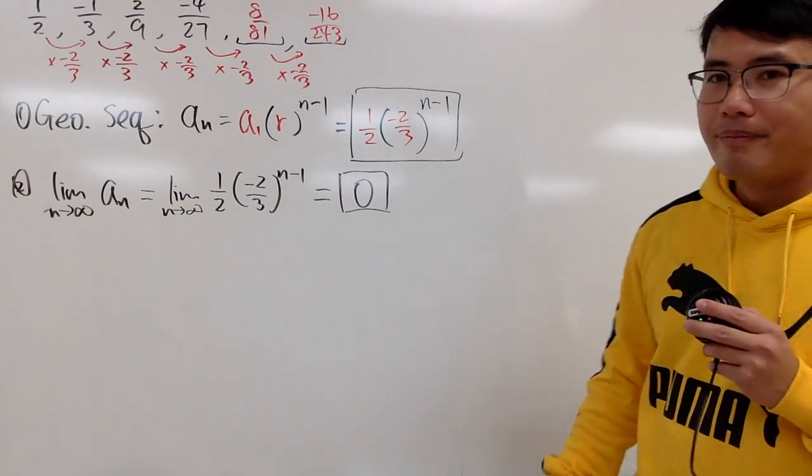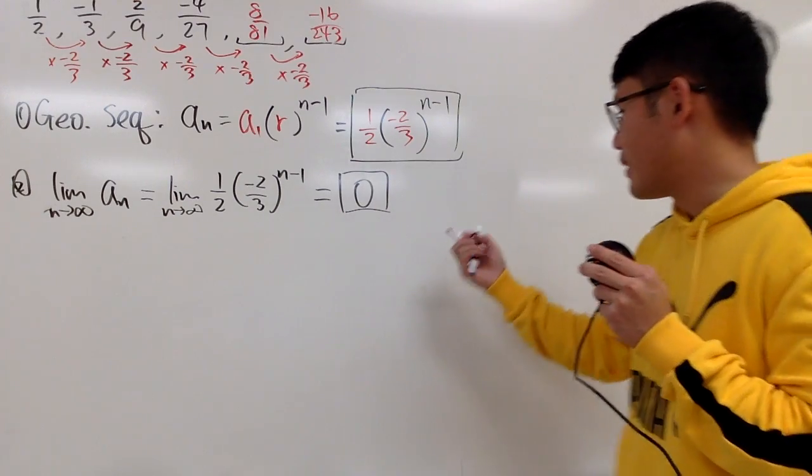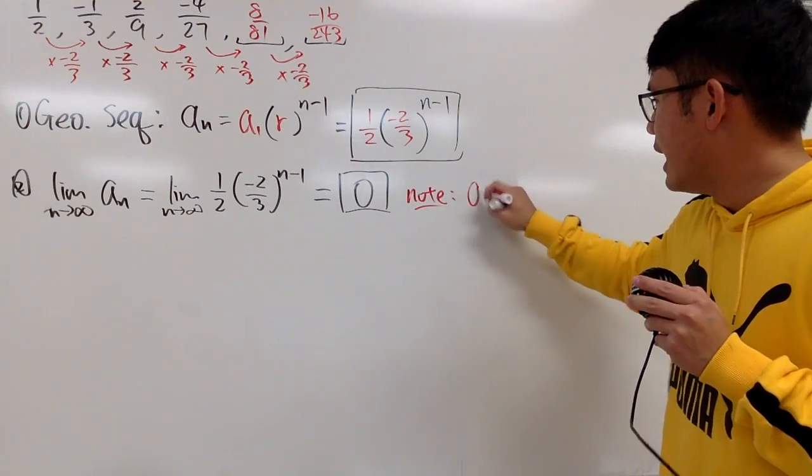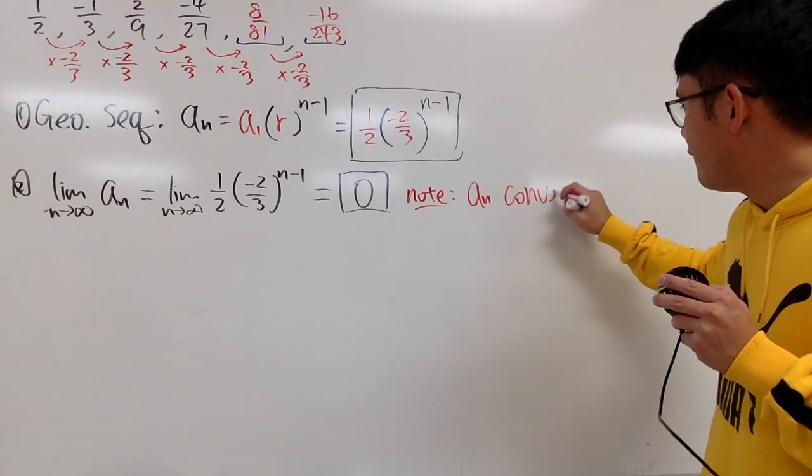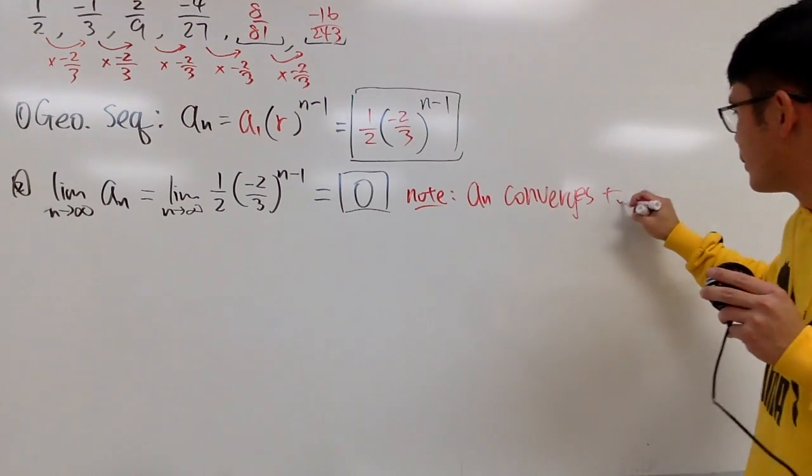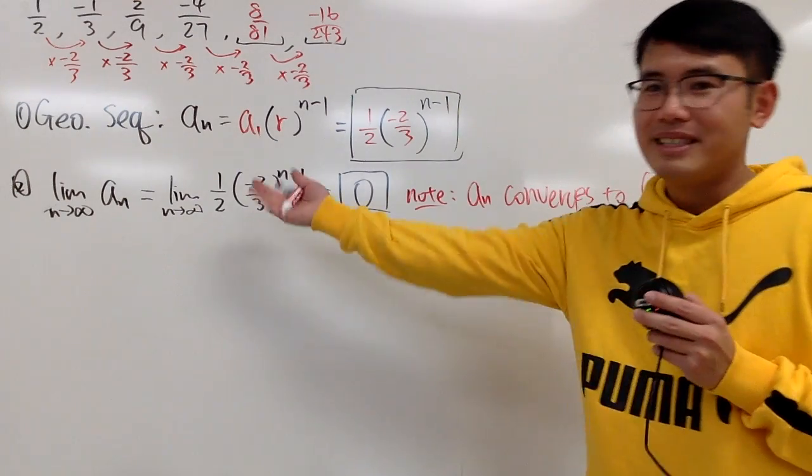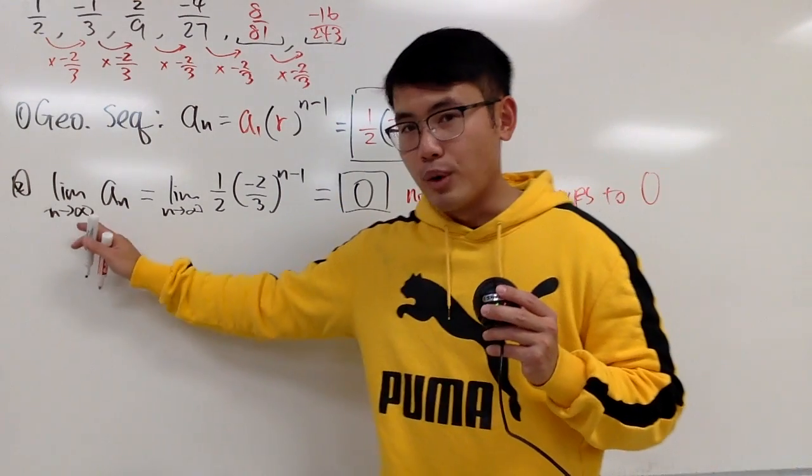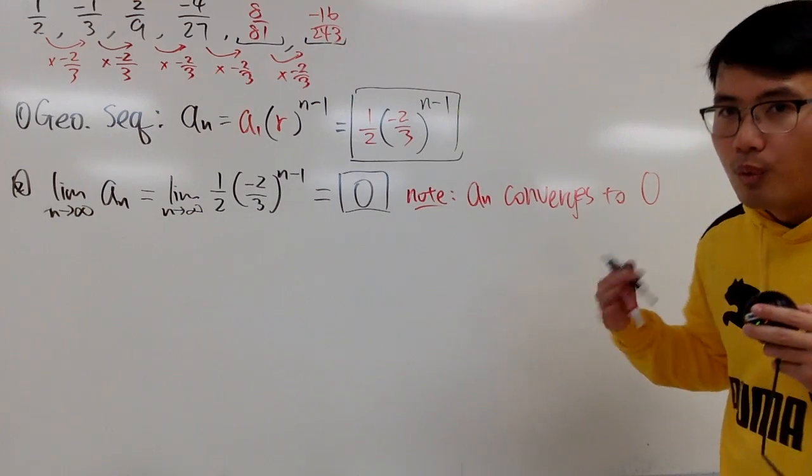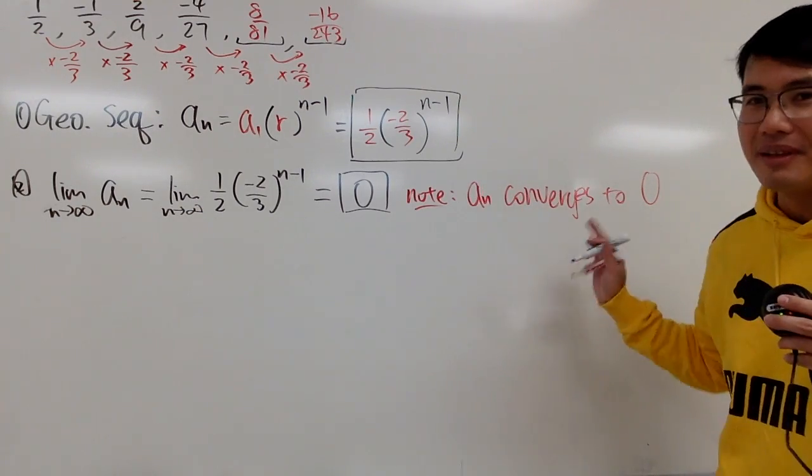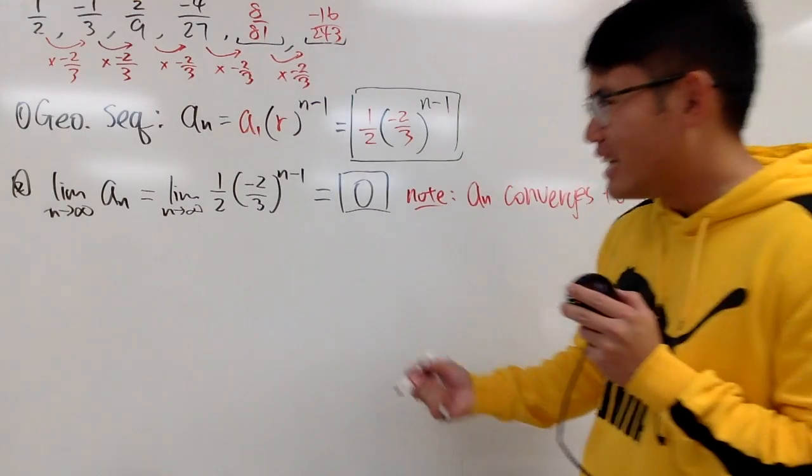So in other words, An converges to 0. So perhaps I will just write this down. In this case, we can say An converges to 0, like that. So it depends if you encounter the question in this form, or maybe the question is phrased as does An converge? It's pretty much the same thing. You have to know how to answer the question.